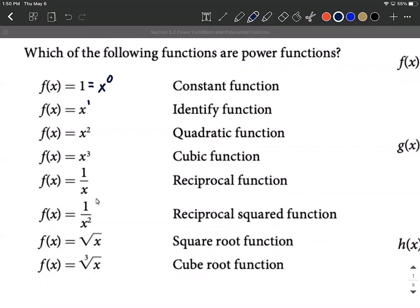Then we get to the reciprocal function. With exponent rules, you can move x from the denominator to the numerator by switching the sign on the exponent. So we can write this as x to the negative first power. The reciprocal squared function, one over x squared, can similarly be rewritten as x to the negative second power, so it's also a power function.